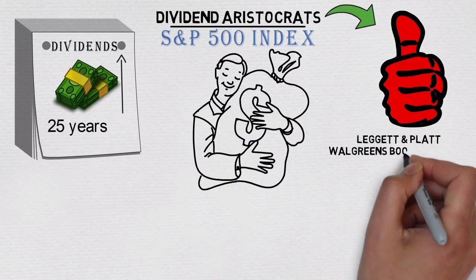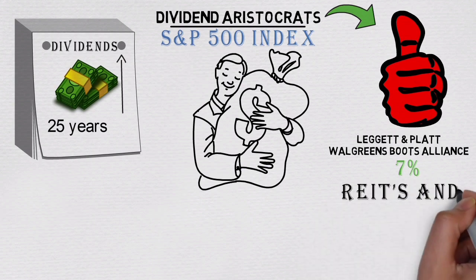Legalett & Platt, and Walgreens Boots Alliance. On average, these pay close to 7% dividend yield, which on the first glance seems way worse option than REITs and covered call ETFs. However,